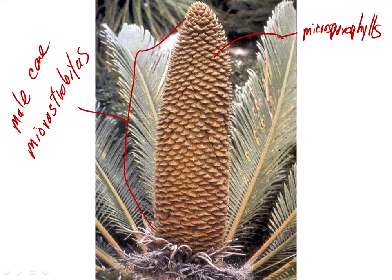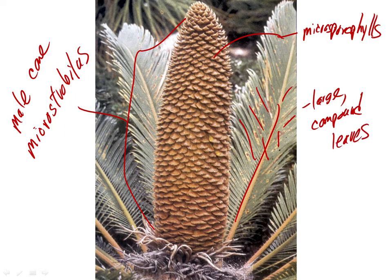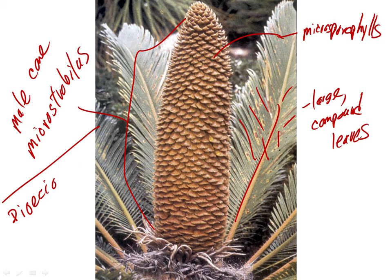If we looked under there, we would find micro sporangia bearing pollen grains. The leaves are large compound — large compound leaves looking somewhat superficially palm-like. The plants are what are called dioecious. Dioecious comes from 'di' meaning two and 'oikos' meaning house — two houses — meaning they are separated into the plants that have the micro strobile and the plants that have the mega strobile.